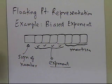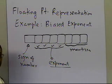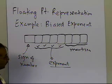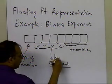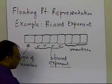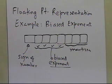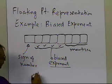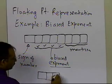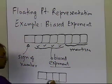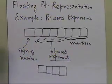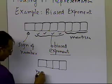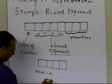Somebody might ask: does that mean we have to rule out negative or positive exponents? That's not the case. What the biased exponent does is it takes care of both negative and positive exponents. If you have four bits for the biased exponent, the minimum value you can have in base 10 is 0.